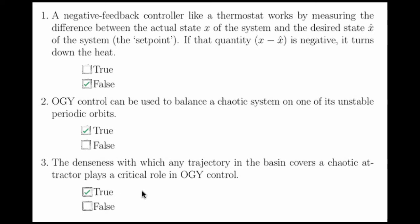The denseness with which any trajectory in the basin covers a chaotic attractor is how you get to any unstable periodic orbit, so this allows you to get very close to, or within one of those boxes like in the video, of an unstable periodic orbit. So this question is also true.